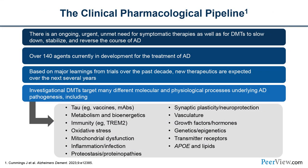There is a vast pharmacological pipeline with over 140 agents currently in development targeting multiple pathways: anti-tau therapies, metabolism and bioenergetics, immunity, oxidative stress, mitochondrial dysfunction, inflammation, proteostasis, synaptic plasticity, vasculature, growth factors, hormones, genetics, epigenetics, and transmitter receptors. Like oncology, Alzheimer's treatment will likely shift to a precision medicine approach using biomarkers to identify the best targets for each patient, combining multiple therapies.